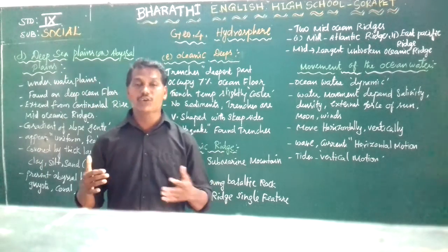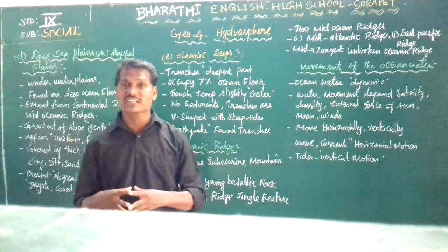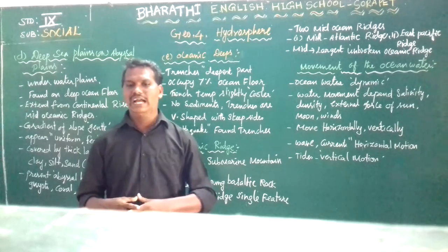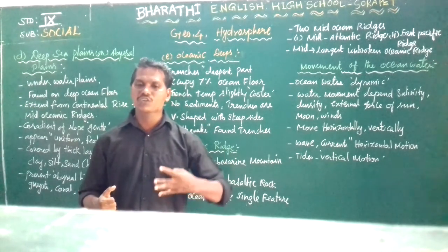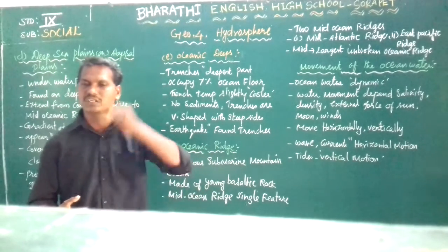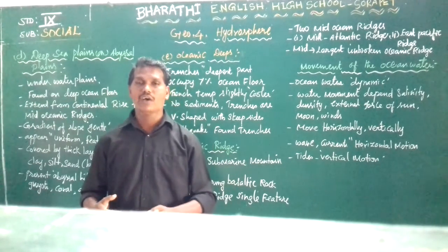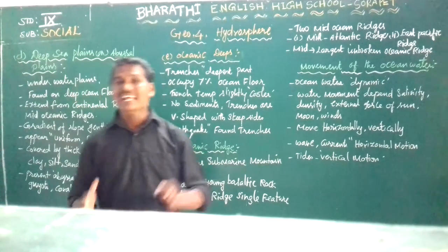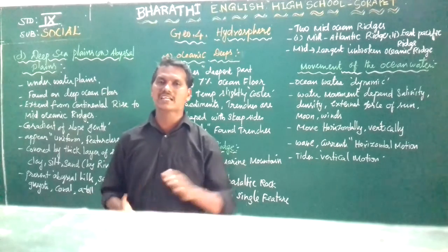So in the last video we discussed: salt water, fresh water, solid water, and ground water. And also the three types of relief features — continental shelf, continental slope, and continental rise. Now in this video we are going to discuss the next important relief features of the ocean floor.